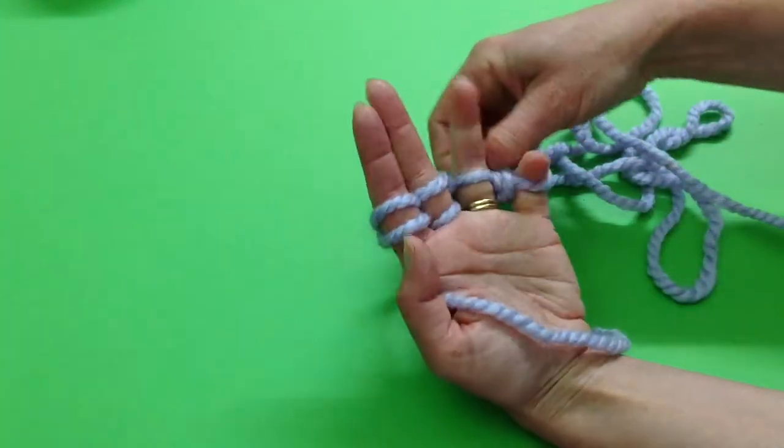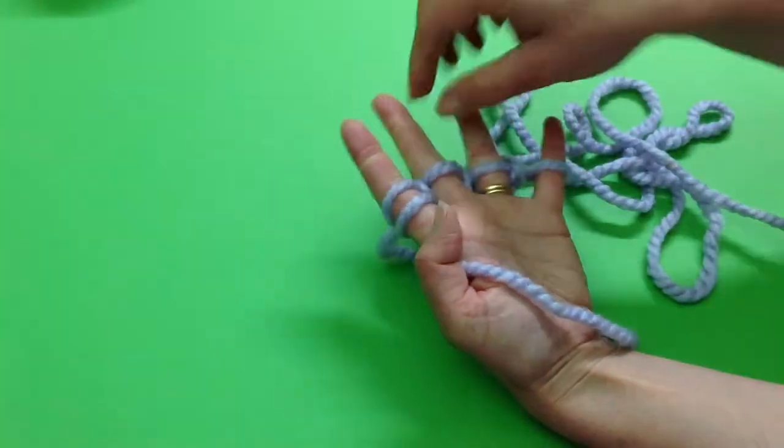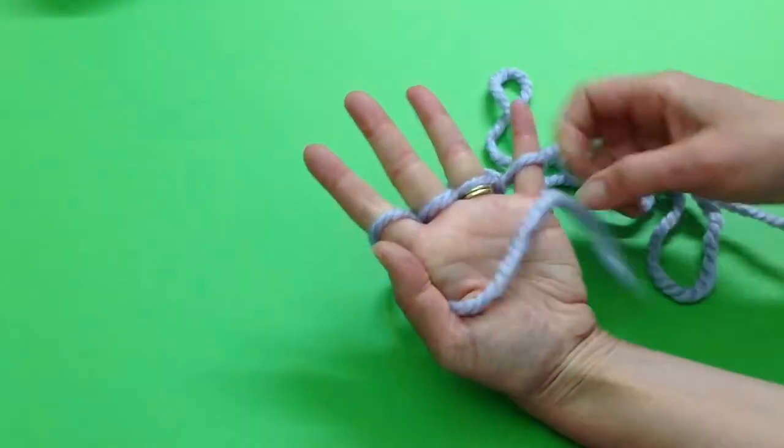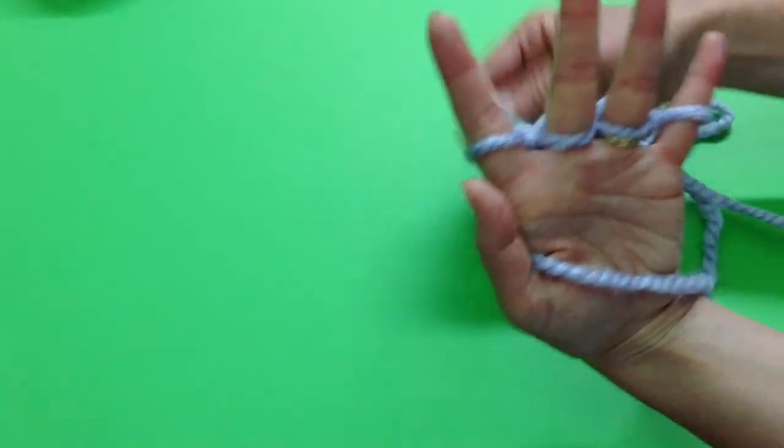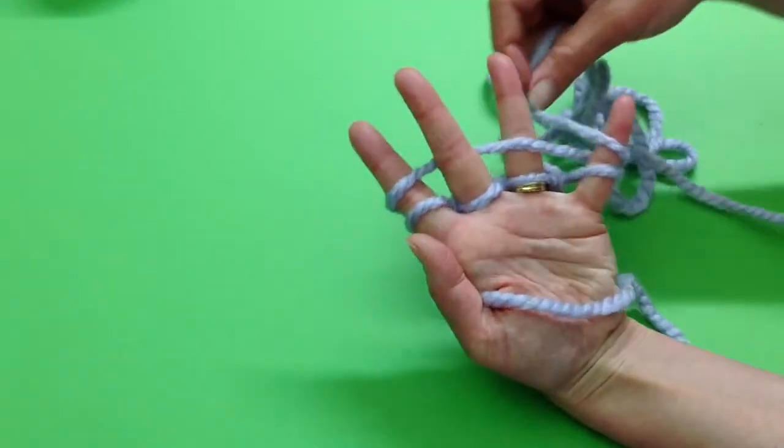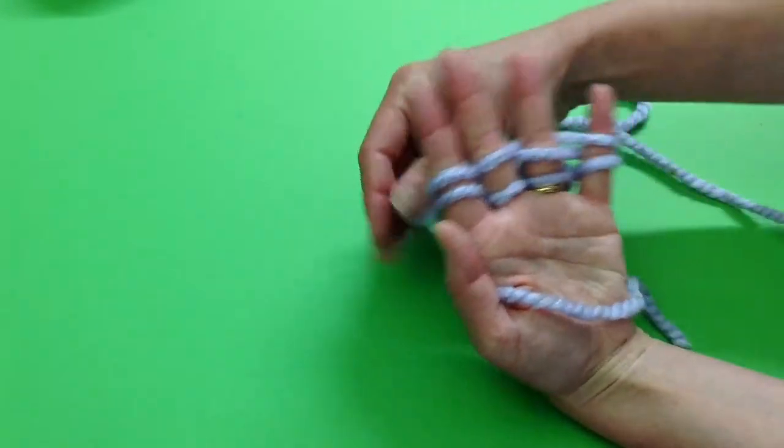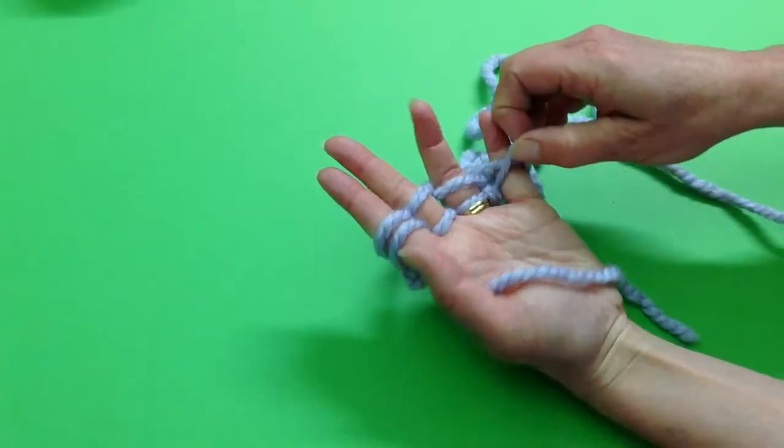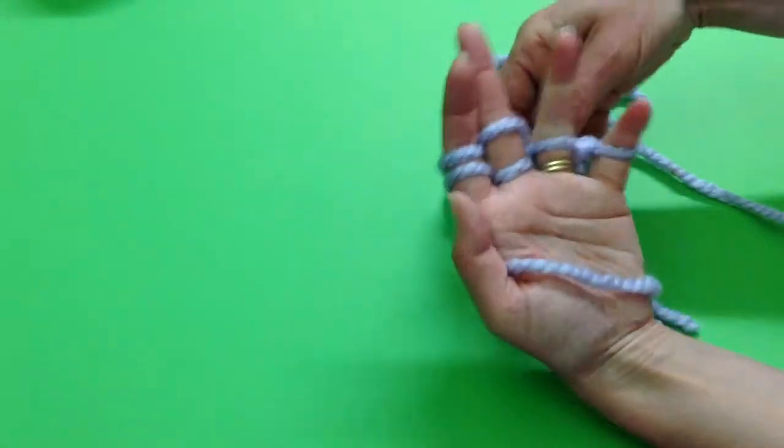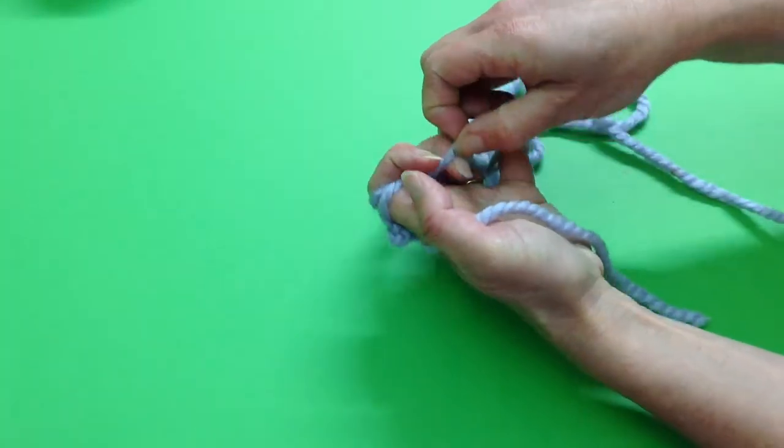And we go over, over, and over, pulling it tight. And again, so this is what we're going to do for our finger knitting: weave the wool in front, behind, in front, behind, and then pull the bottom loop over the top loop.